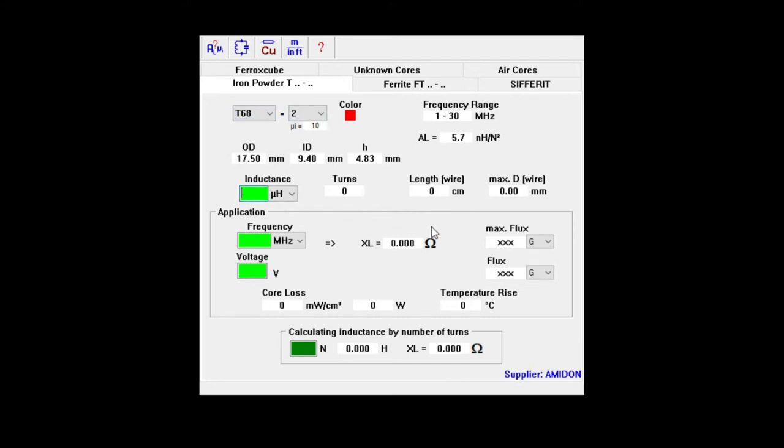In my case, I did choose a FT-68-2 with an AL of 5.7 nanohenry per square turn. And you have to choose 1.88 microhenrys, 18 turns. It is a 32 centimeter long wire. If you want to calculate at 7.1 megahertz, it gives you an XL which is around 83, 84 ohms that you would expect.